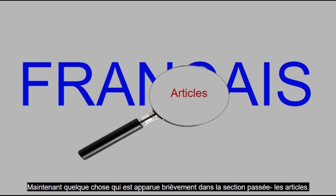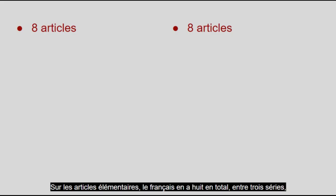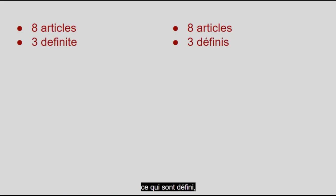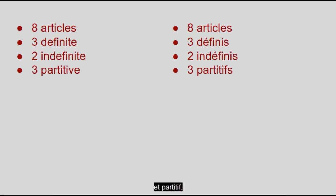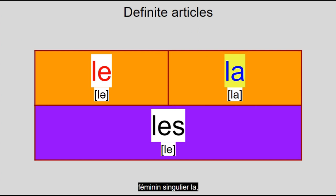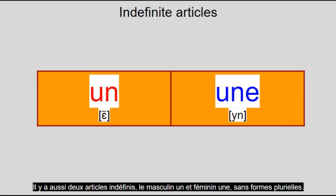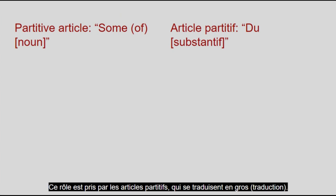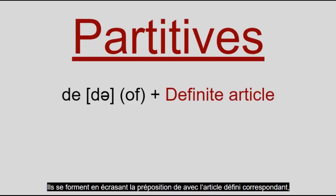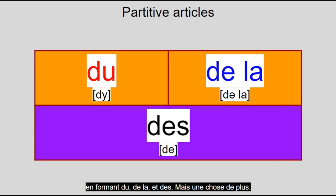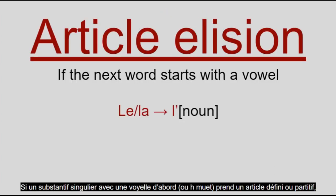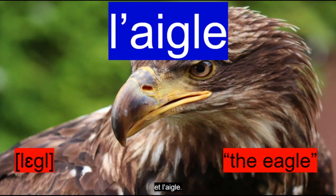Now for something which made a brief appearance in the last section: the articles. For the basic articles, French has eight total in three sets: definite, indefinite, and partitive. The definite articles are masculine singular le, feminine singular la, and non-gender plural les, which is a common participant in liaison. There are also two indefinite articles: masculine un and feminine une, with no plural forms. That role is taken on by the partitive articles, which roughly translate to 'some of.' They're formed by combining the preposition de with the corresponding definite article, forming du, de la, and de l'. If a singular noun beginning with a vowel or H muet takes a definite or partitive article, regardless of gender, the article gets contracted to l' and directly attaches to the noun, such as in l'avocat and l'aigle.